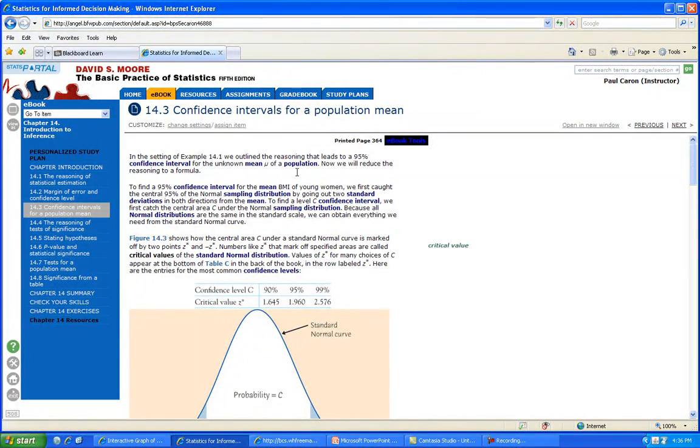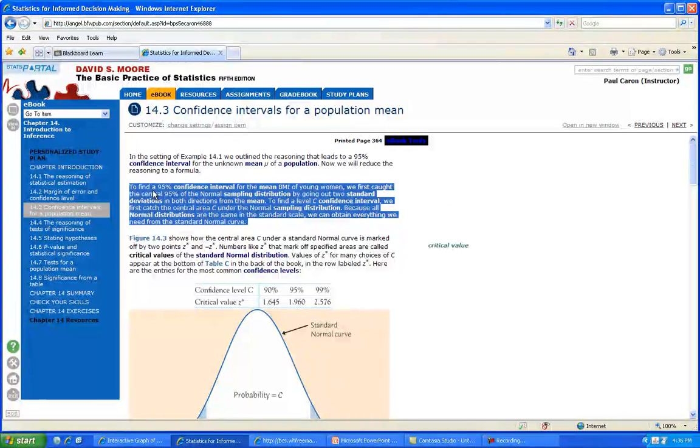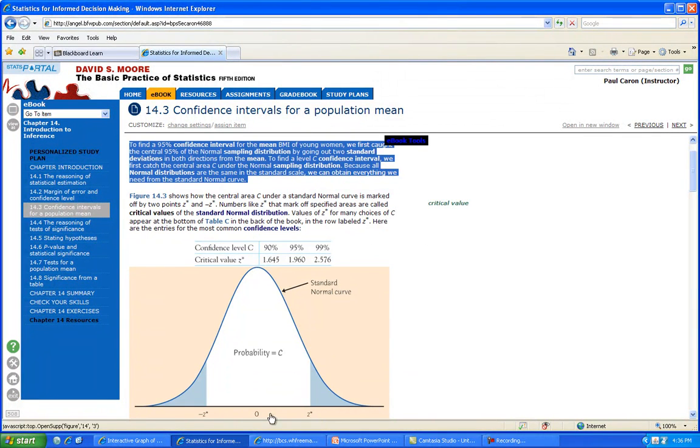Confidence intervals for the BMI that we did for young women. We can go further. Let me review this paragraph here. To find the 95% confidence interval for the mean BMI of young women, we first caught the central 95% of the normal sample distribution by going out two standard deviations—one, two in both directions.